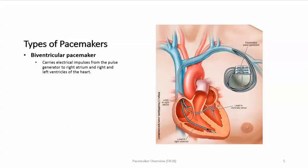The last type is the biventricular pacemaker, which carries electrical impulses from the pulse generator to the right atrium and both the right and left ventricles of the heart. One lead goes into the right atrium, one into the right ventricle, and one into the coronary sinus of the left ventricle.